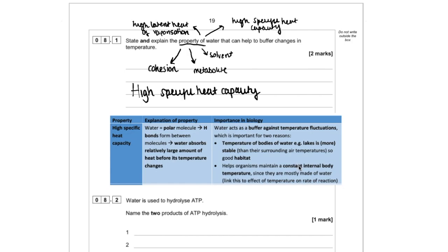But it's also important in organisms themselves because they're mostly made up of water and that means that because the temperature doesn't change much, that helps organisms maintain a constant internal body temperature, particularly organisms that aren't able to regulate their own body temperature.